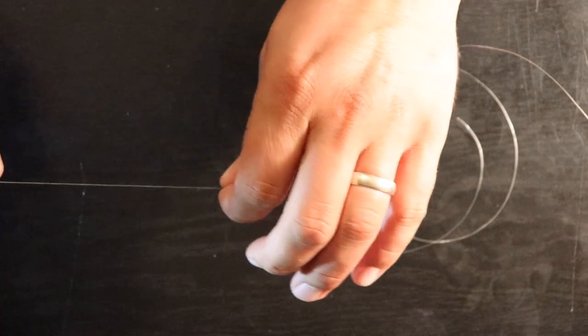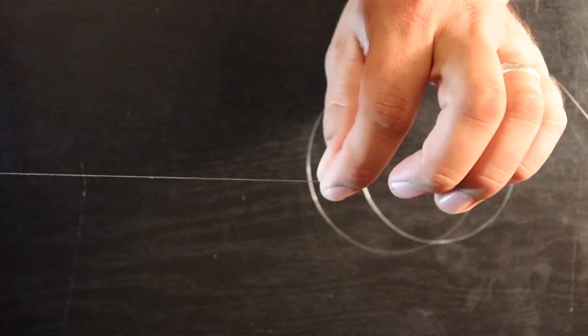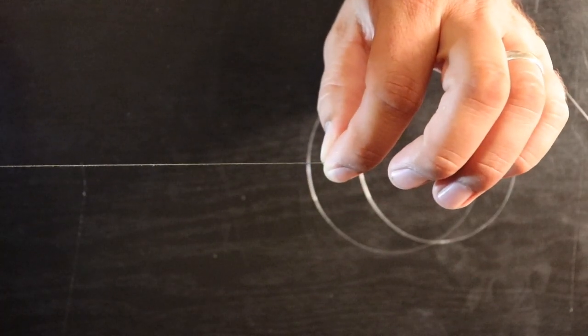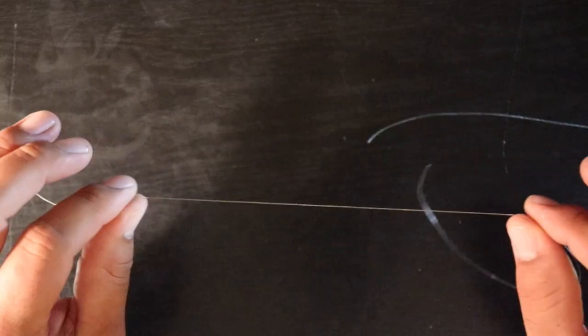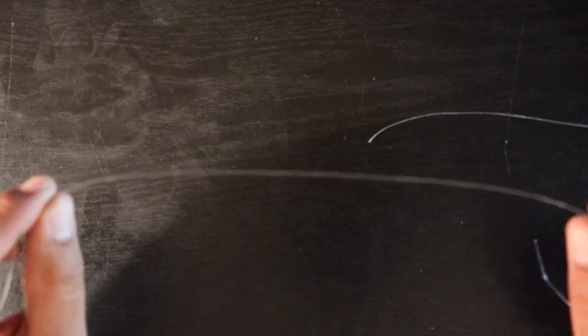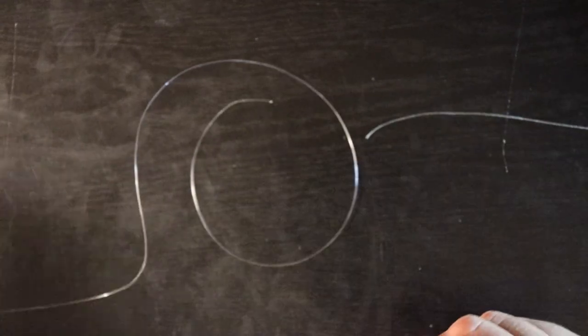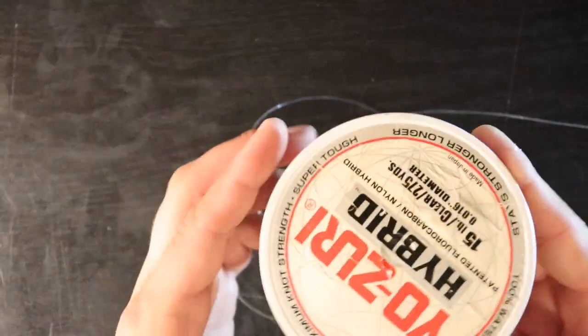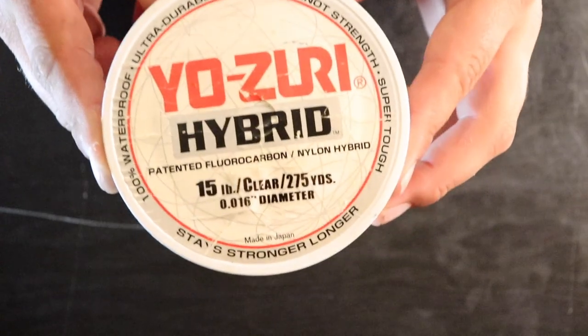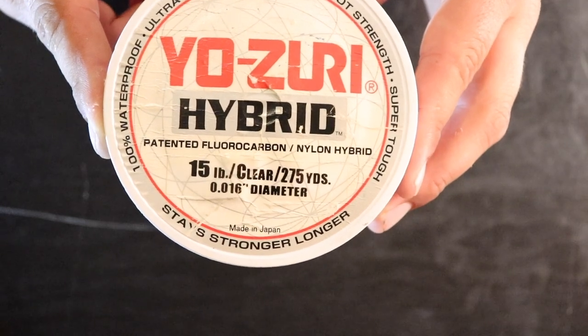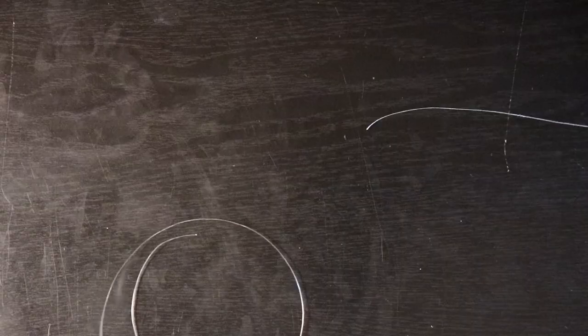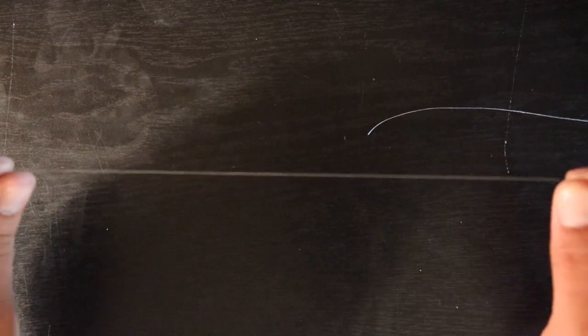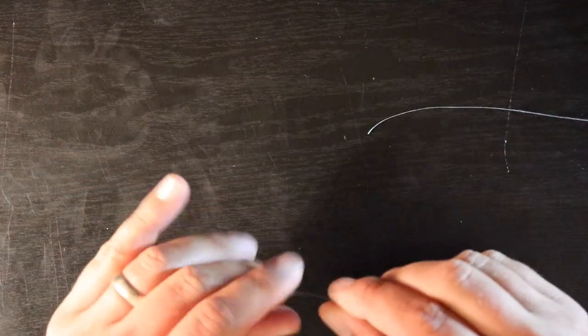What we're going to start with first is our line. So this here is my braided mainline, this is 20 pound Power Pro. Next we have our leader material which for this I use 15 pound fluorocarbon. It's actually a hybrid as you can see here, so I guess it's kind of a mix of a fluorocarbon slash nylon hybrid. Price is much better than 100% fluorocarbon but I have not seen a whole lot of difference as far as performance.